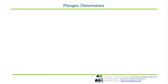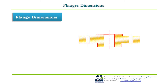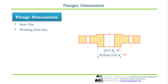Flange dimensions or flange nomenclature as per ASME B16.5 are as follows. Bore diameter is equal to the inside diameter of the pipe and usually depends upon the schedule of the pipe. Welding hub diameter is equal to the outside diameter of the pipe NPS. BCD or PCD — bolt circle diameter or pitch circle diameter — is the diameter of the circle which passes through the center of each bolt hole. It is one of the critical dimensions of the flange.